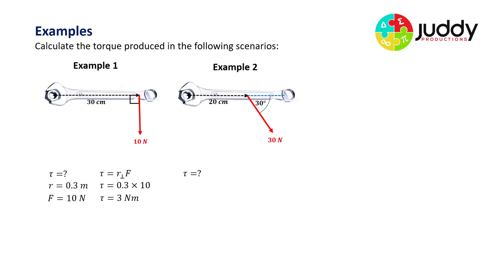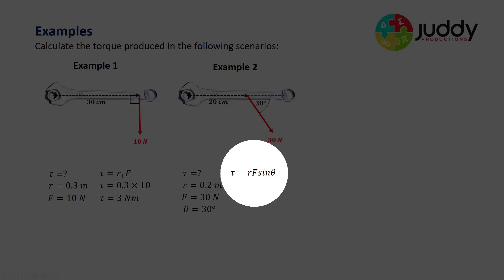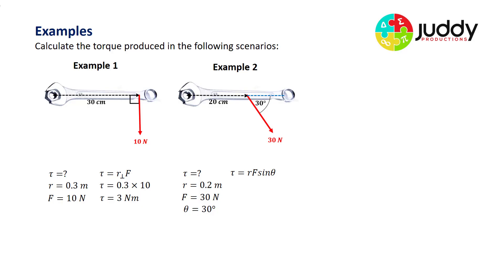Example two: find the torque. We have a radius of 0.2 meters, a force of 30 newtons, and the angle to the horizontal is 30 degrees. We use: torque equals radius times force times sine of theta. Substituting the values in — making sure the calculator is in degrees not radians — we get a torque of 3 newton meters.